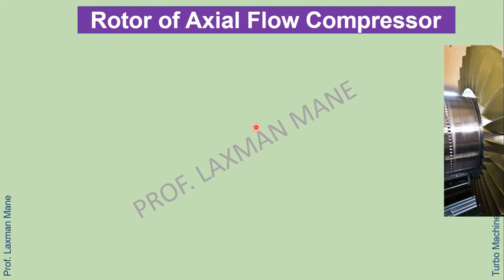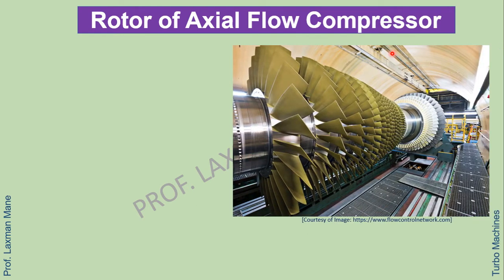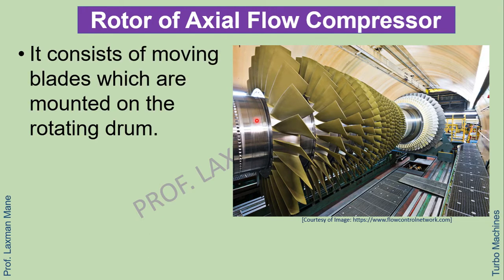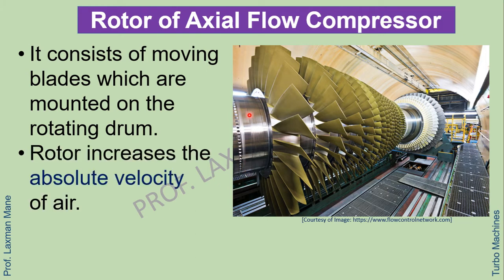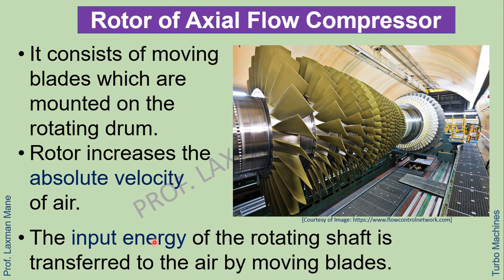Now we will see the rotor of axial flow compressor in detail. It consists of moving blades mounted on a rotating drum. The rotor increases the absolute velocity of air, meaning the kinetic energy of air is increased. The input energy of the rotating shaft is transferred to the air by the moving blades, thus increasing the kinetic energy of the air.